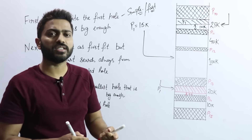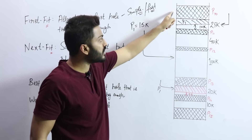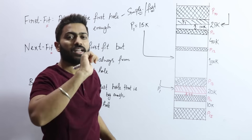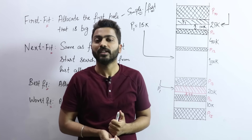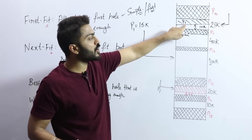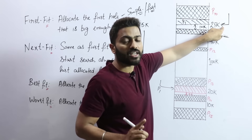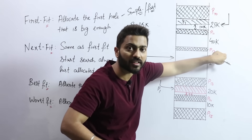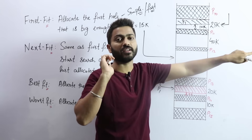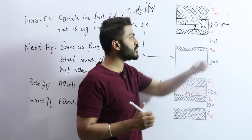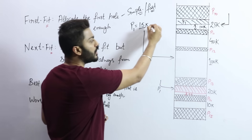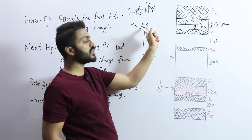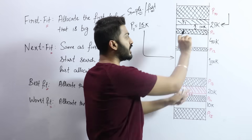Next Fit has one more advantage over First Fit. First Fit always starts searching from zero. As soon as the first slot is found, the process is placed. But Next Fit makes it even faster by placing a pointer at the last allocated location. Next time searching starts from that pointer — not from zero. For example, if a new process of 15KB arrives, the next available hole of 40KB is found from the pointer position, and the 15KB process can easily be placed there.